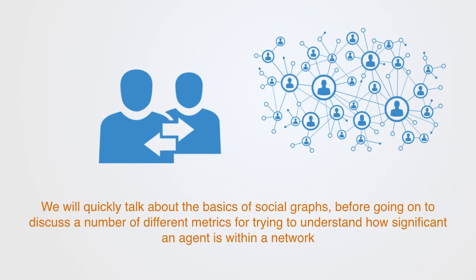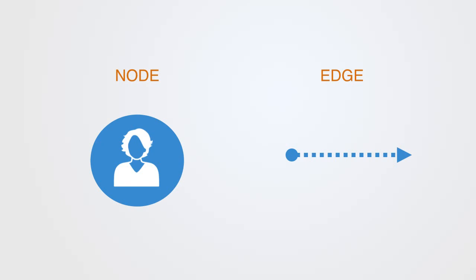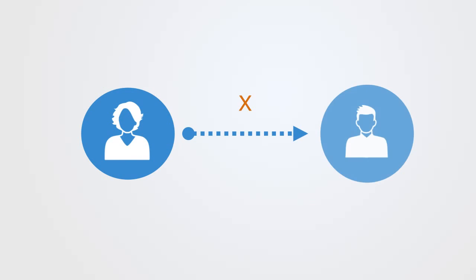The basic constituents of a social graph are nodes and edges. Nodes are people or groups of people. Edges, also called ties, represent the relationships between these social actors, which can come in many different kinds such as friendship, kinship, colleague, etc.